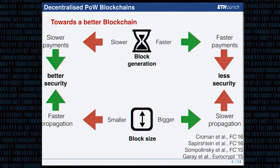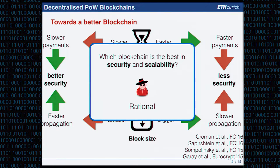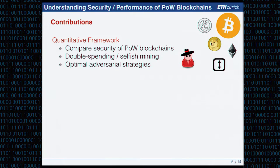These qualitative tensions have been understood very well. But what we wanted to understand in our work is the quantitative aspect — which blockchains are best in terms of security and scalability against a rational adversary. Our first contribution is a quantitative framework that allows us to compare the security provisions of different proof-of-work blockchains objectively. We account for two main attacks: double spending and selfish mining, considered under optimal adversary strategies — the strongest possible adversary.